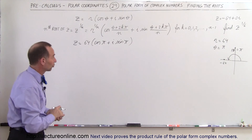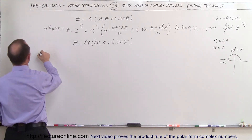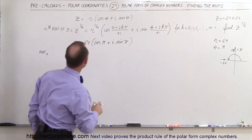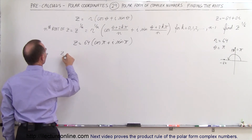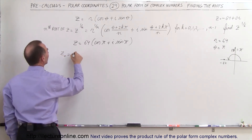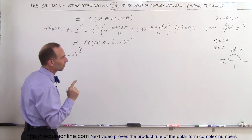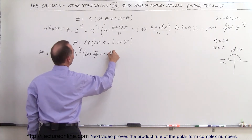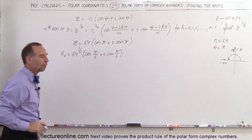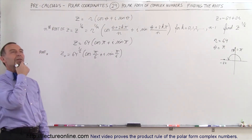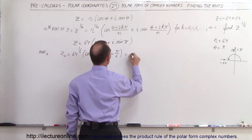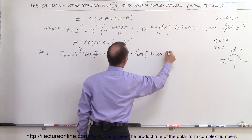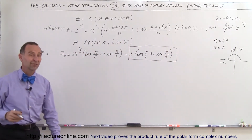Now we're going to find all 6 roots. For root z sub 0, we let k equal 0. So z sub 0 equals 64 to the 1/6 power times the cosine of pi divided by 6, plus i times the sine of pi divided by 6. Since 64 equals 2 to the 6th power, 64 to the 1/6 is 2. So z sub 0 equals 2 times the cosine of pi over 6, plus i times the sine of pi over 6.